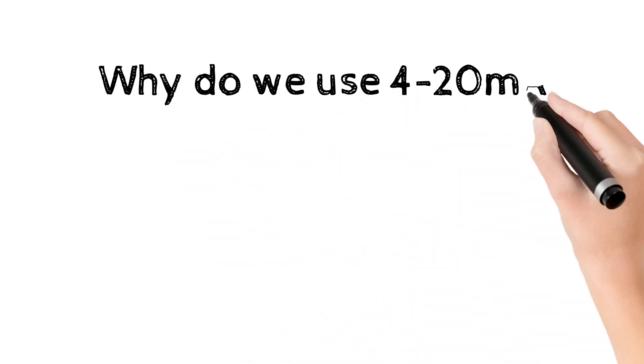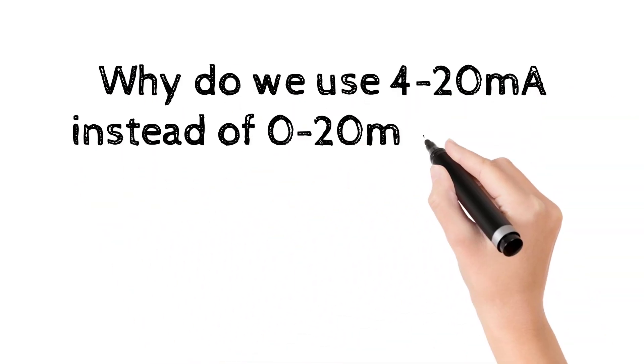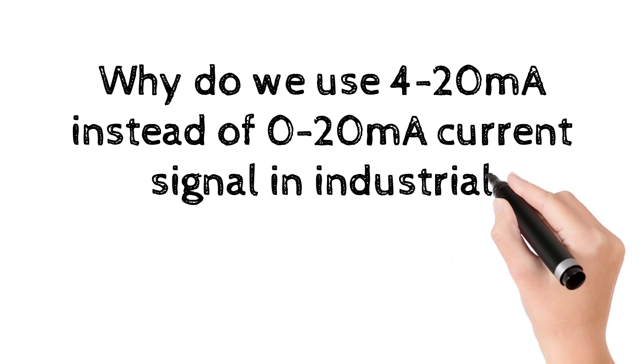Why do we use 4 to 20 mA instead of 0 to 20 mA current signal in industrial automation?